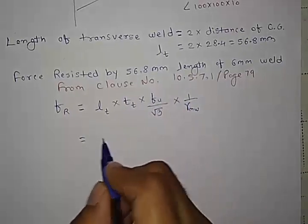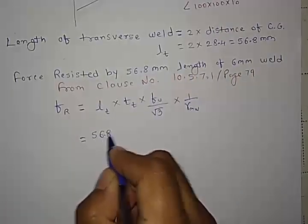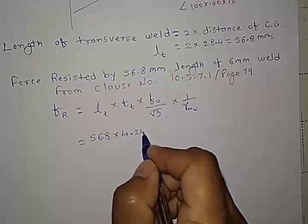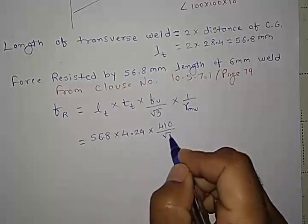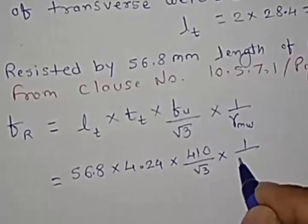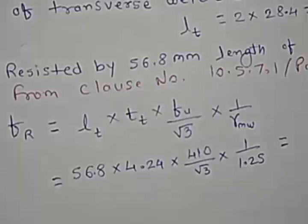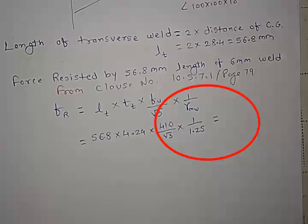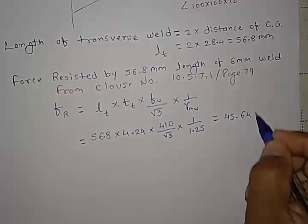So we got here this one 56.8 mm. So thickness we have already calculated in the last video, that is 4.24 multiplied by fu by root 3, that is 410. And this is 1.25, this we have seen in earlier case. So this if you calculate, you will get it around 45.64 kN.